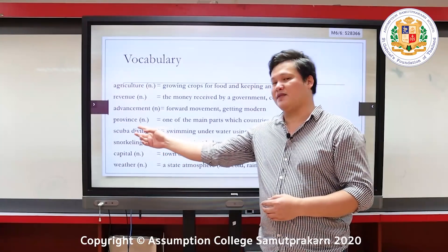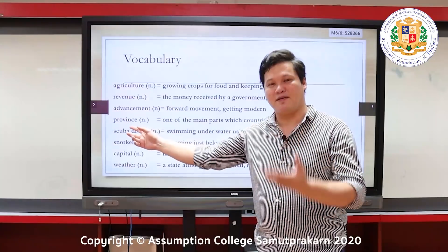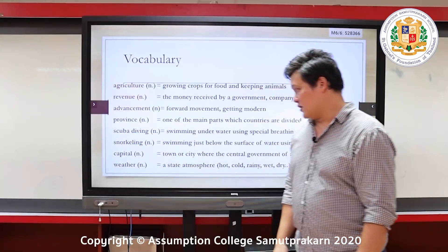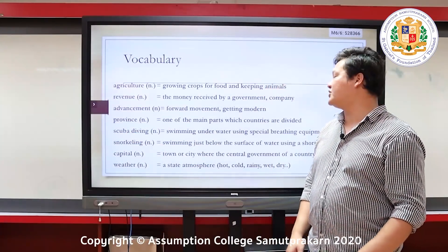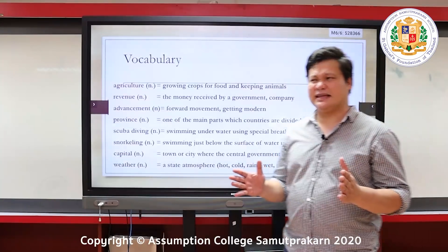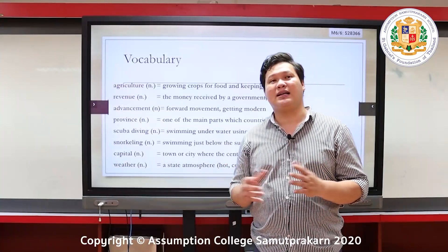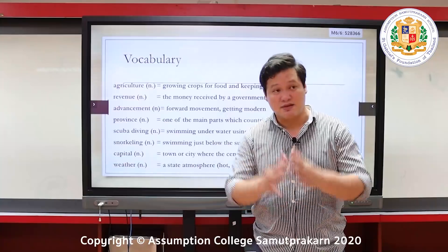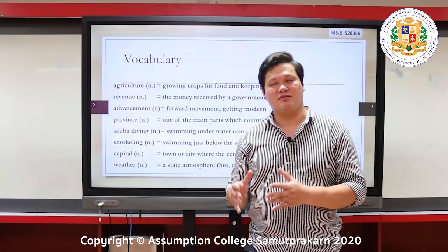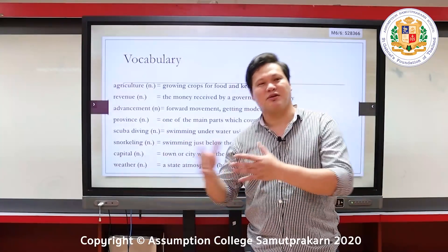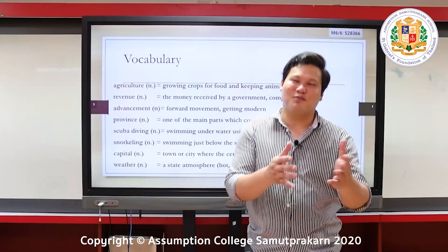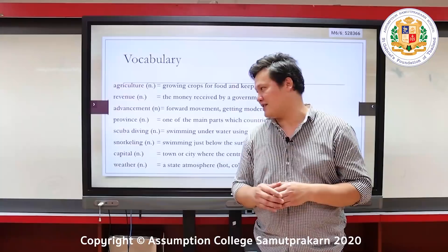Province: one of the main parts which countries are divided into. For example, Thailand has about 77 provinces. Bangkok is a province.